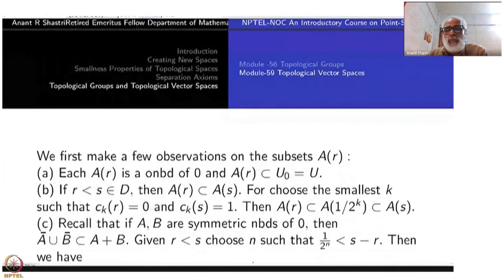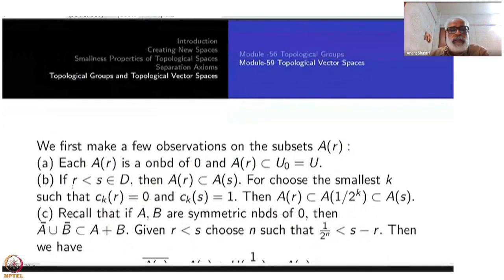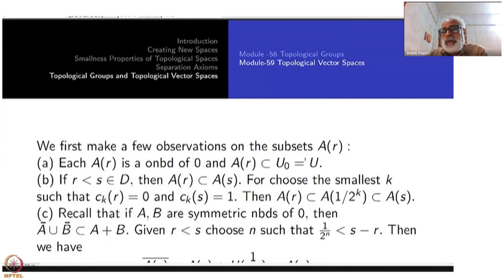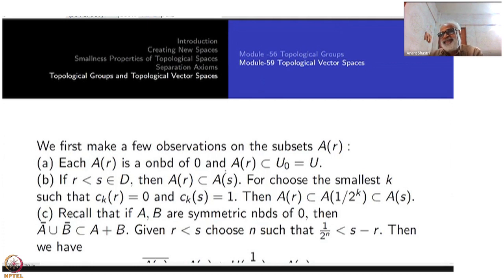We make a few observations on the subsets A_r. Each A_r is an open neighborhood of 0, and A_r ⊆ U_0 = U. This is important. If r < s in D, then A_r ⊆ A_s. These steps are similar to what is done in proving Urysohn's lemma, but somewhat easier here.